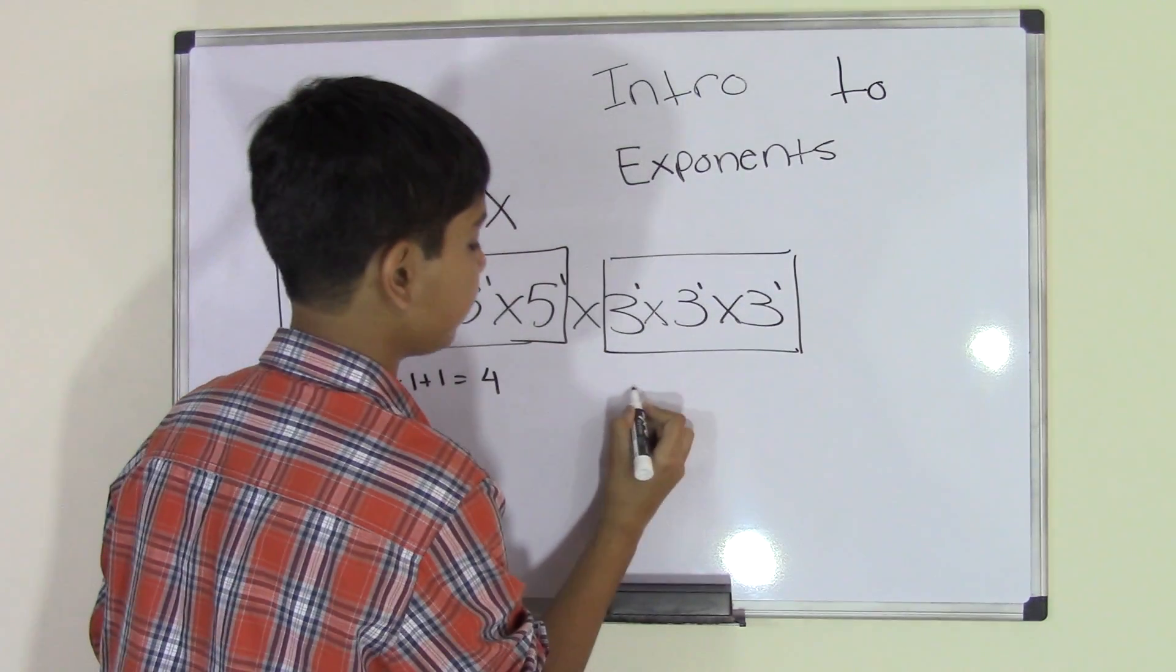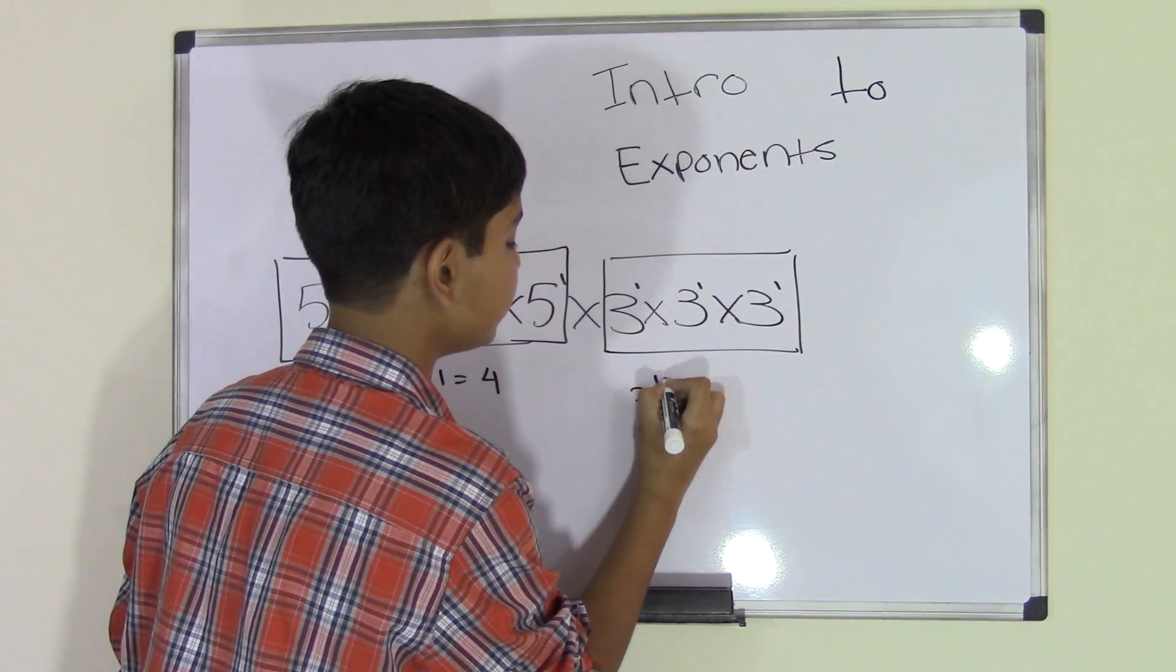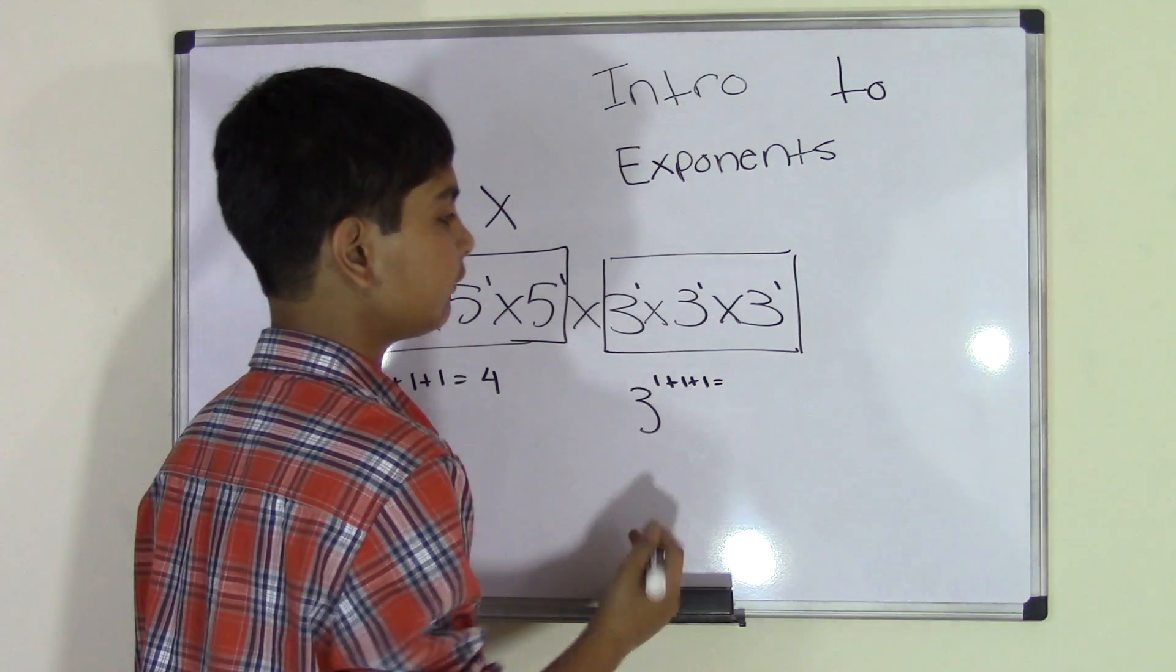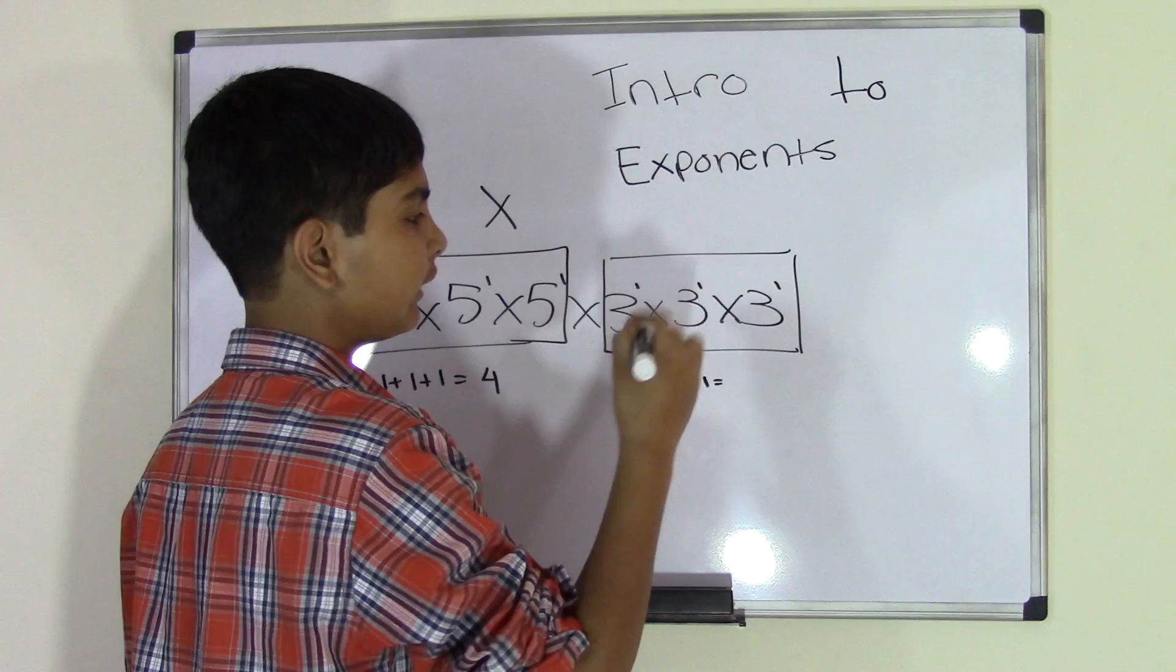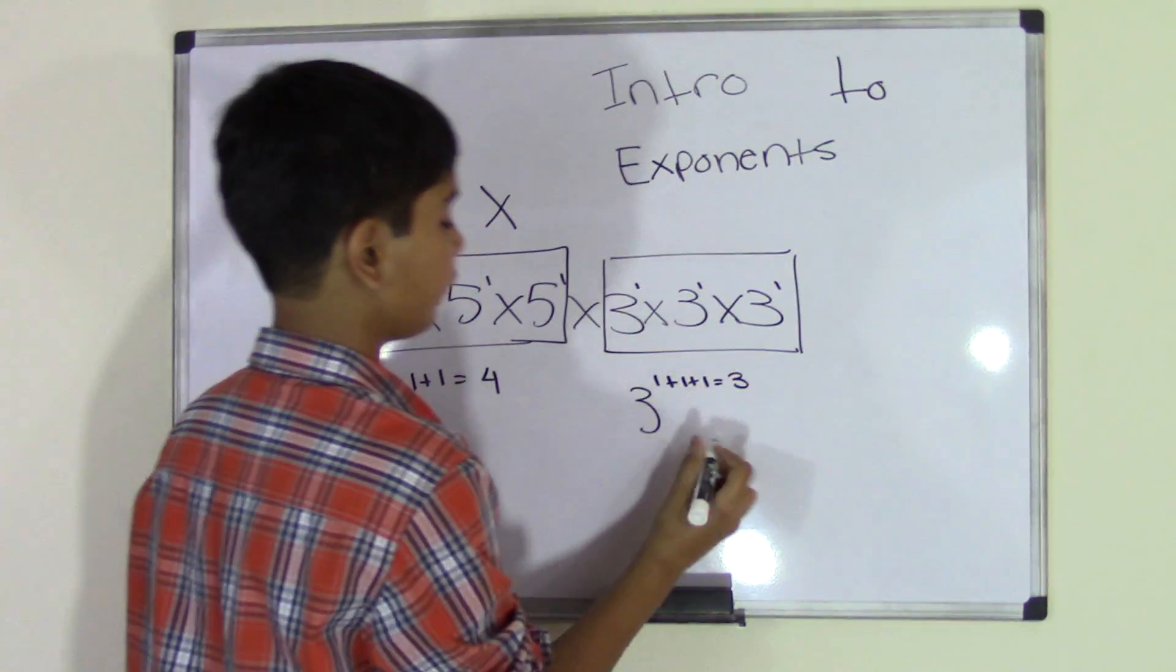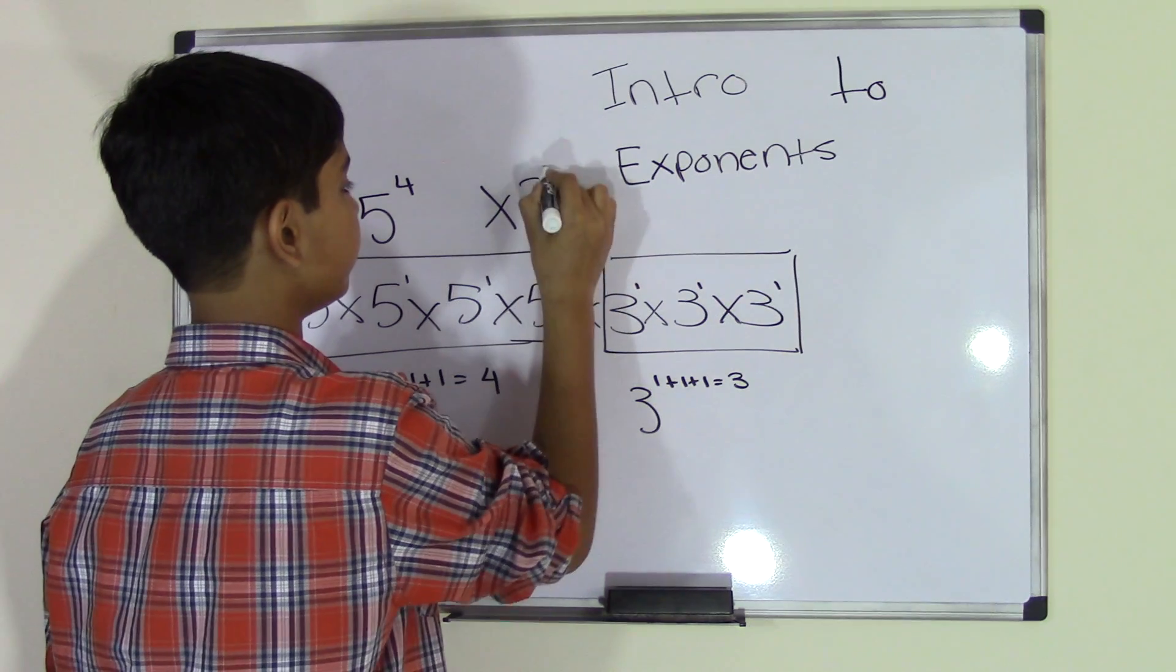And over here we can do the same thing. We can add their exponents. So we can do 1 plus 1 plus 1. Why am I doing 1 plus 1 plus 1 three times? Because there are 3 numbers, each to the power of 1. So we get an answer of 3. So we get 3 to the power of 3.